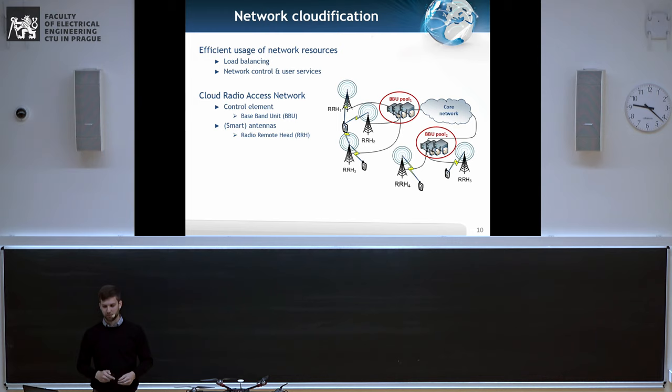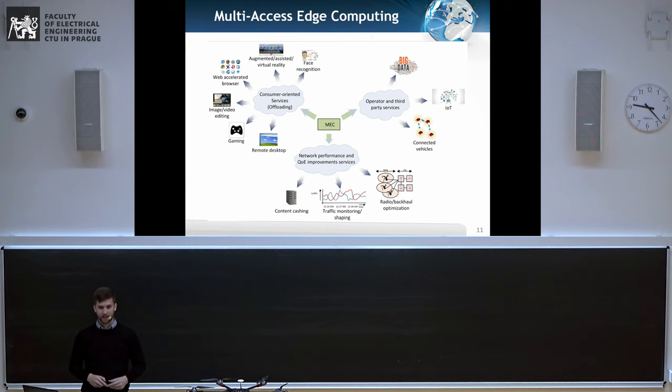Before going through cloud radio access network. So we have a user, you have a base station, you have core network and this BBU pool. Basically the computation resources, through which are this base station connected. And this enables us to reduce the communication cost, enable ultra dense deployment. So you can actually achieve the higher data rates.